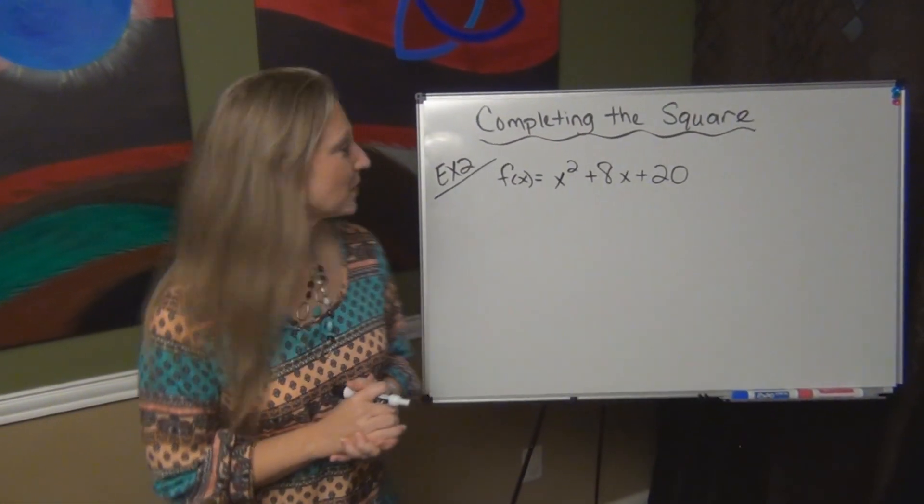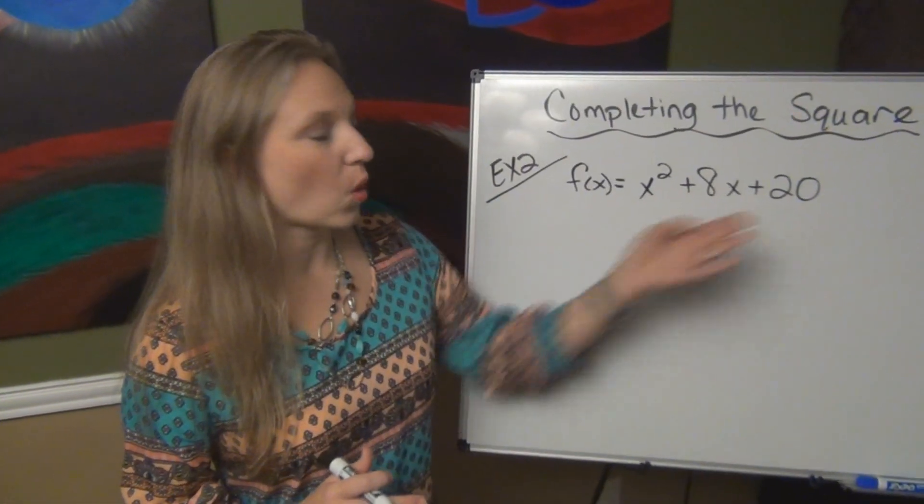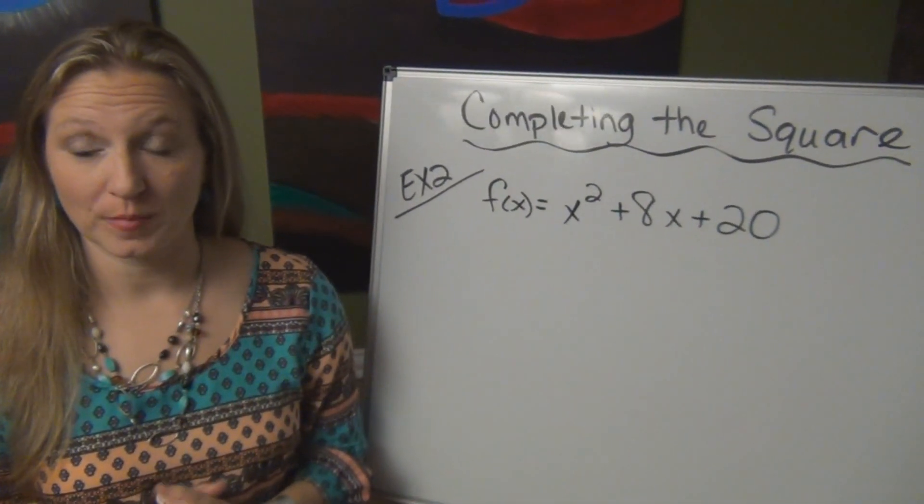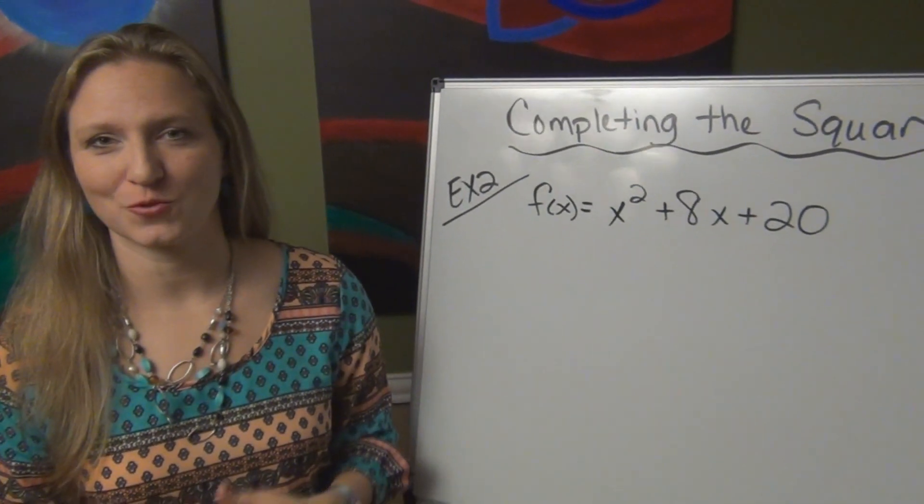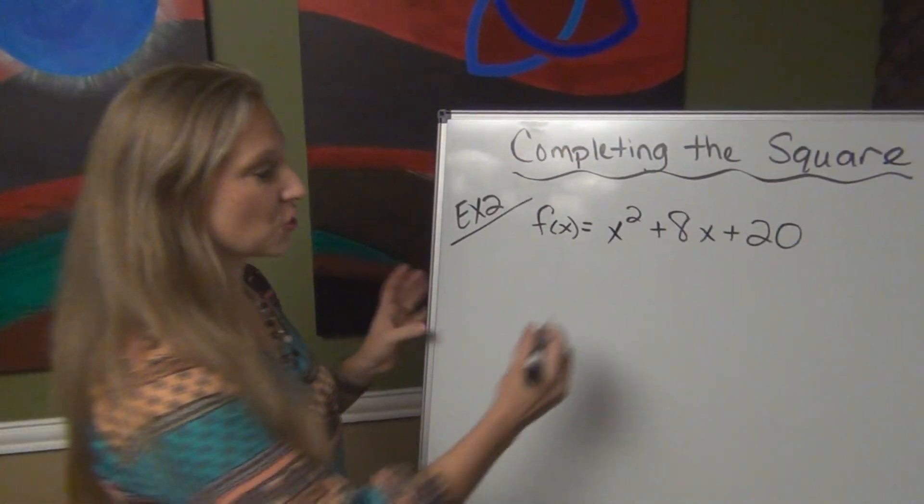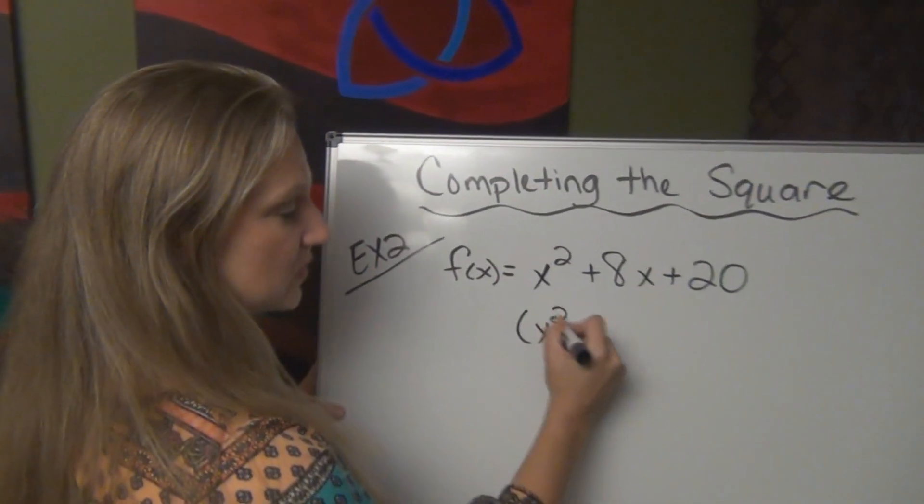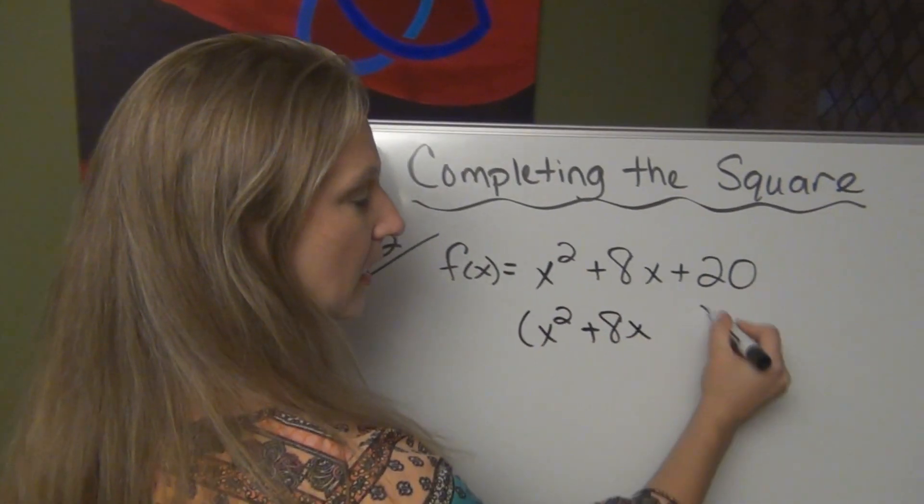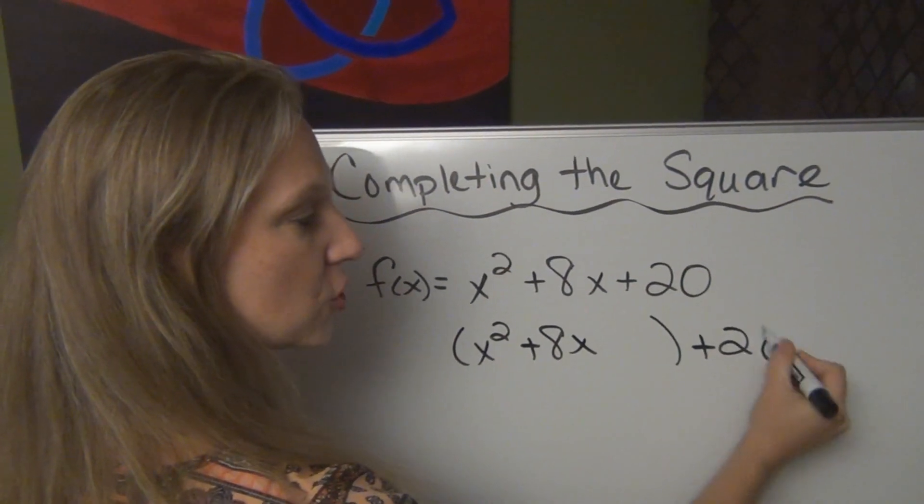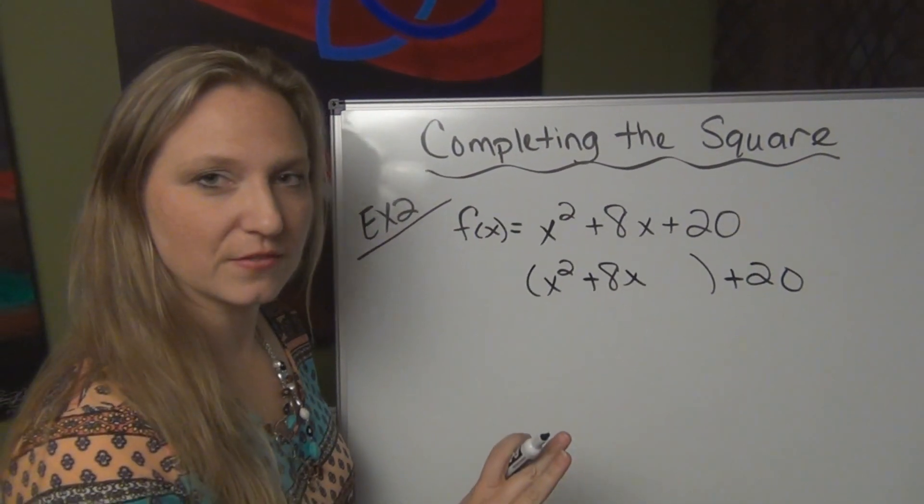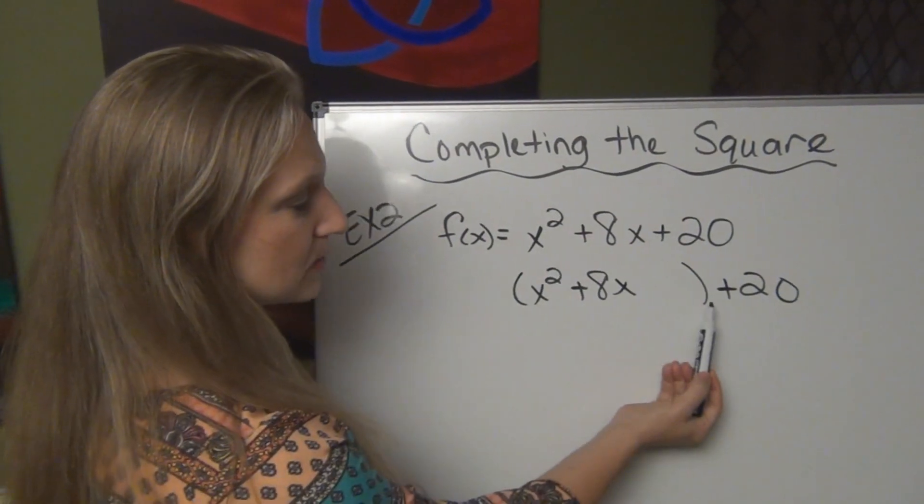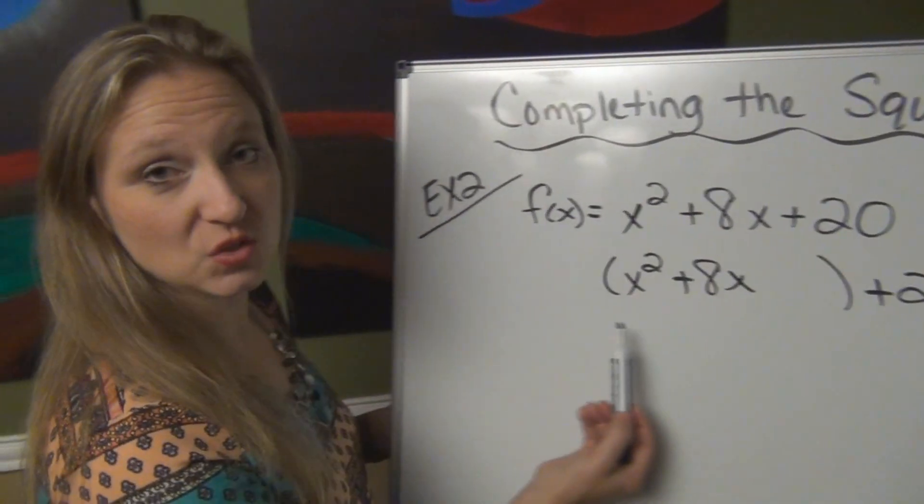Okay, let's do another example. I have another quadratic equation here in standard form, and I want to convert it to vertex form by completing the square. So the first thing I'm going to do is I'm going to look at these first two terms, and I'm going to kick the third term outside of the parentheses. Remember I'm setting that aside for the moment.